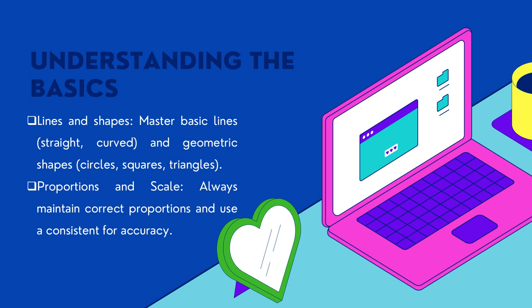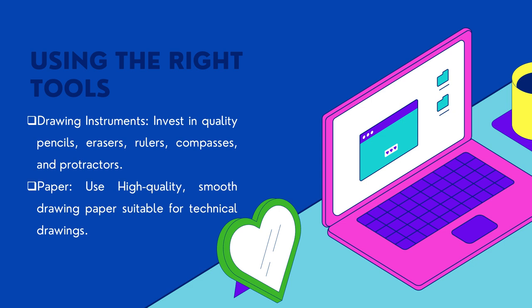It makes your drawing perfect and gives you accuracy and precision. For using the right tools, invest in quality pencils, erasers, rulers, compass, and protractors. If you have good tools, you have a good drawing. Also use a high-quality smooth drawing paper suitable for technical drawing — we have A4, A3, and so on — so it matters what you need.